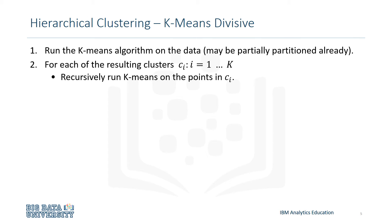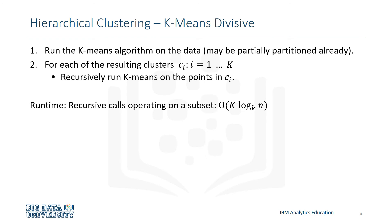This form of top-down hierarchical clustering works quickly because each time we divide the clusters, we're running recursive calls of k-means on a smaller subset. The runtime for this operation is logarithmic because every time the k-means algorithm runs, it's log base k of n, where n is the number of data points and k is the number of clusters you produce from each cluster in every iteration.